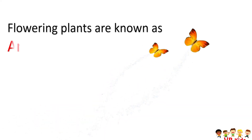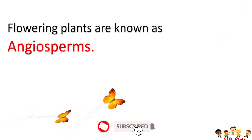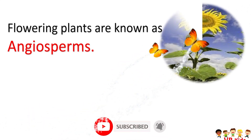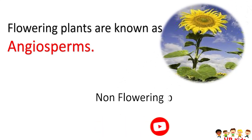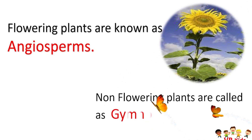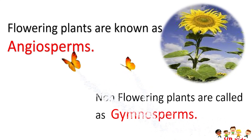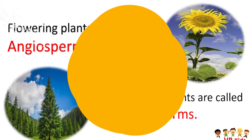Now we can see some facts. Flowering plants are known as angiosperms — example, sunflower. Non-flowering plants are called gymnosperms — example, pine tree.